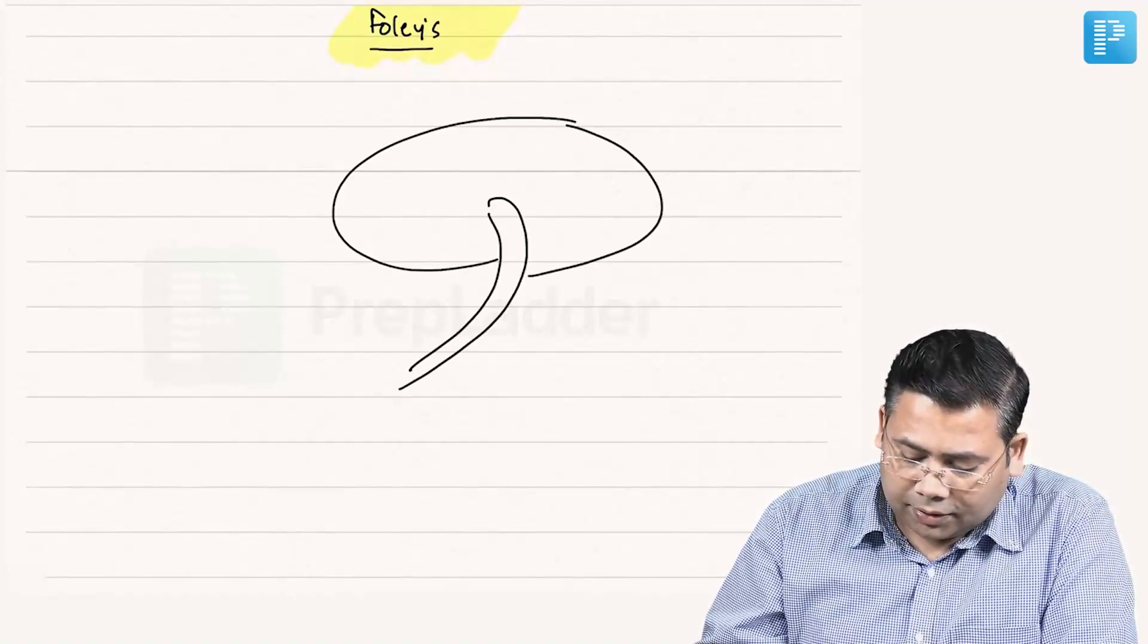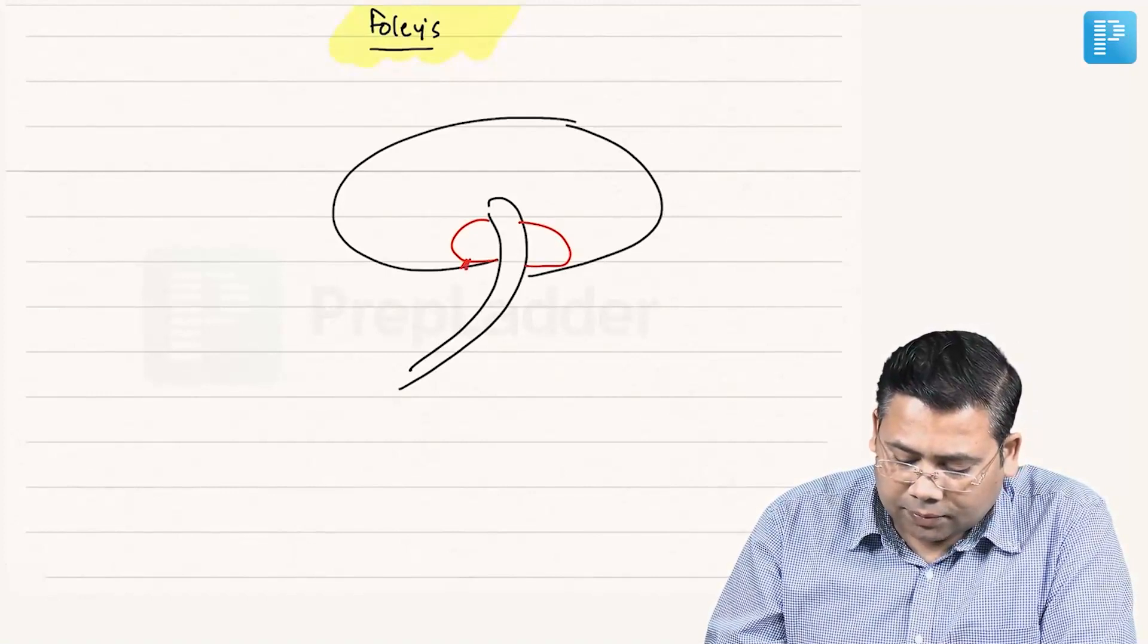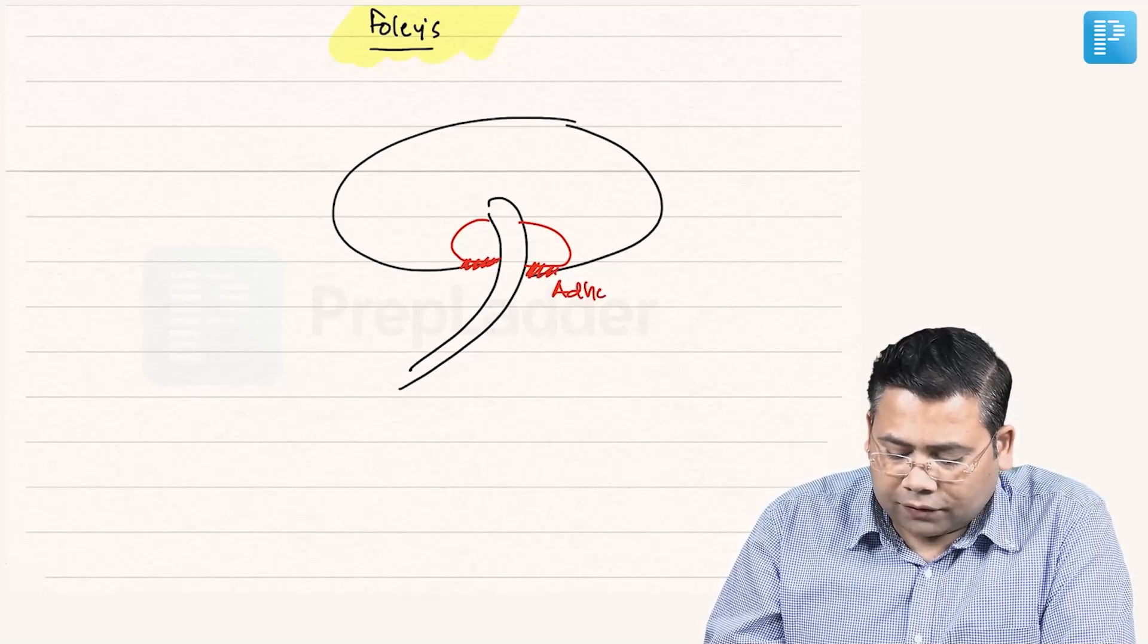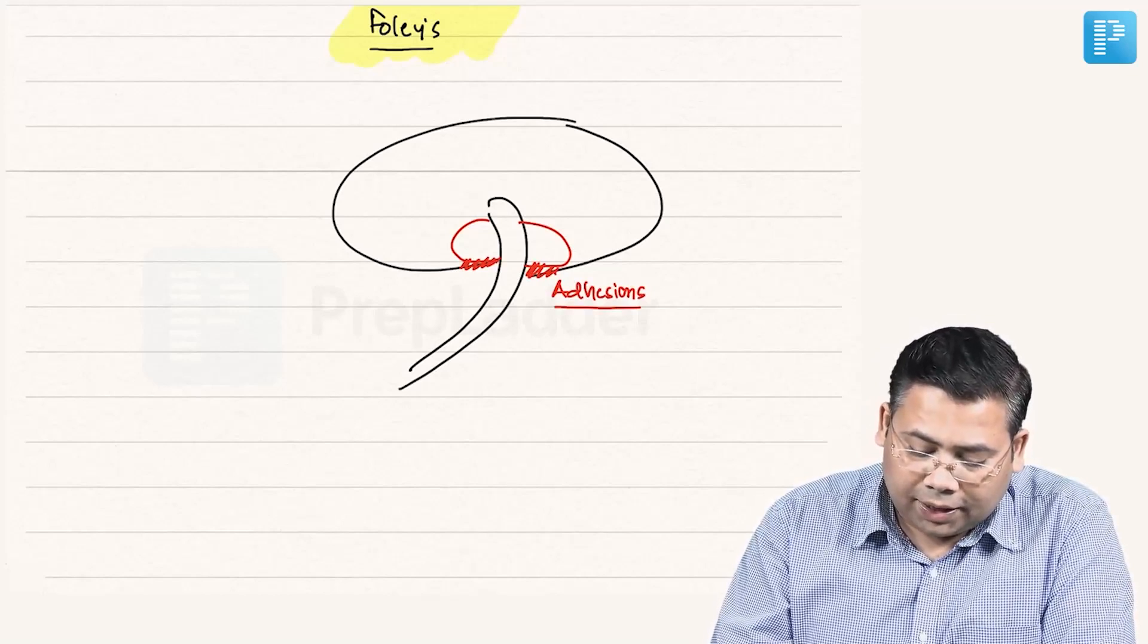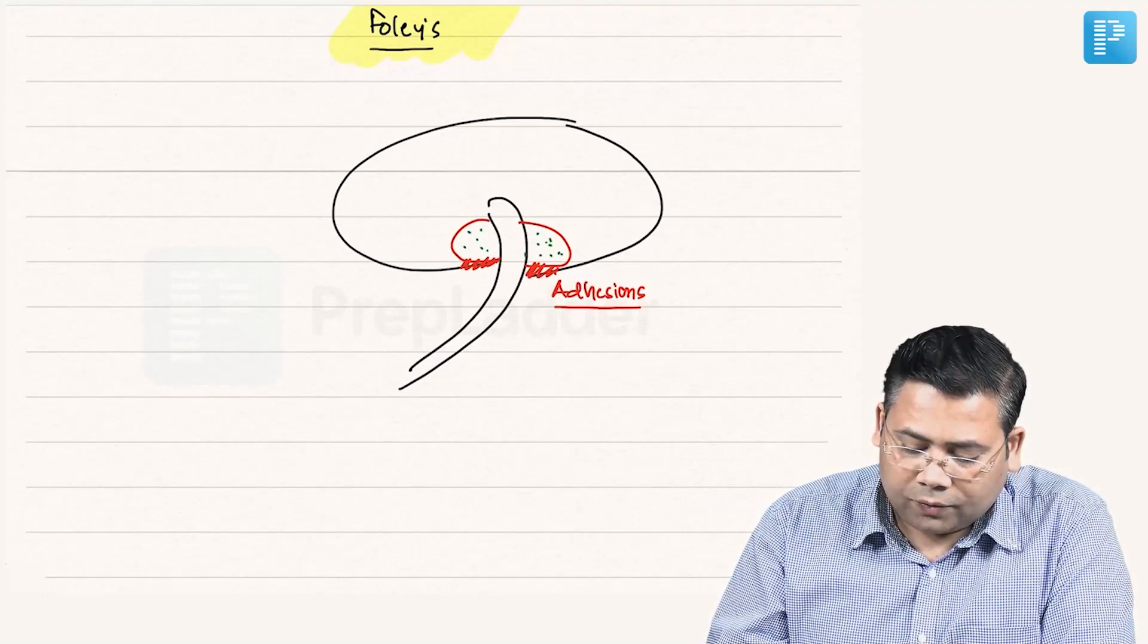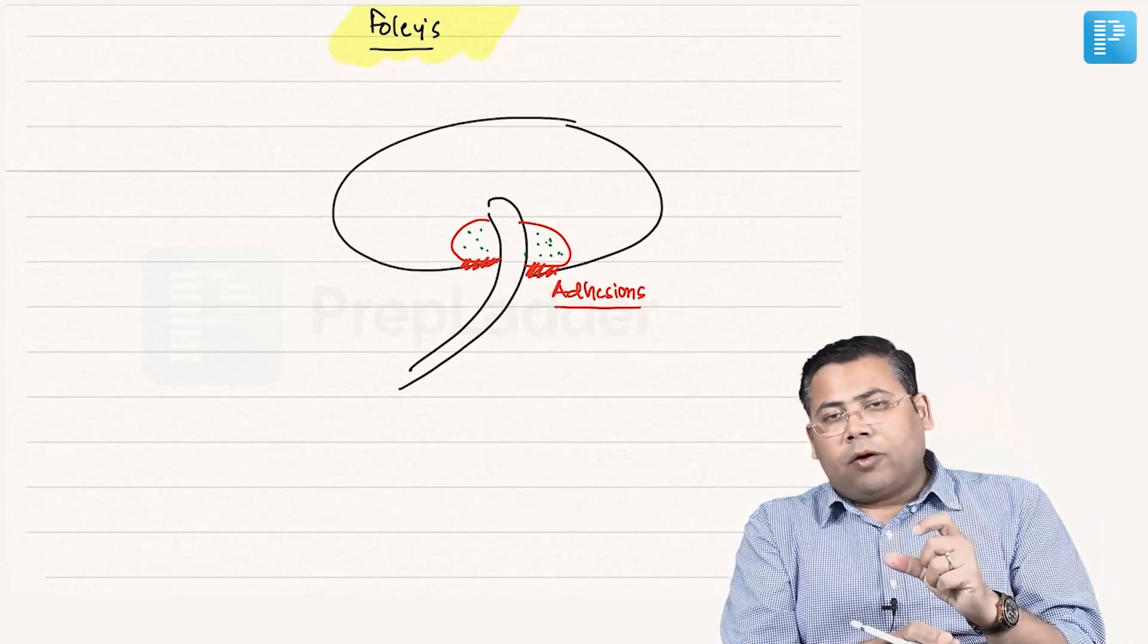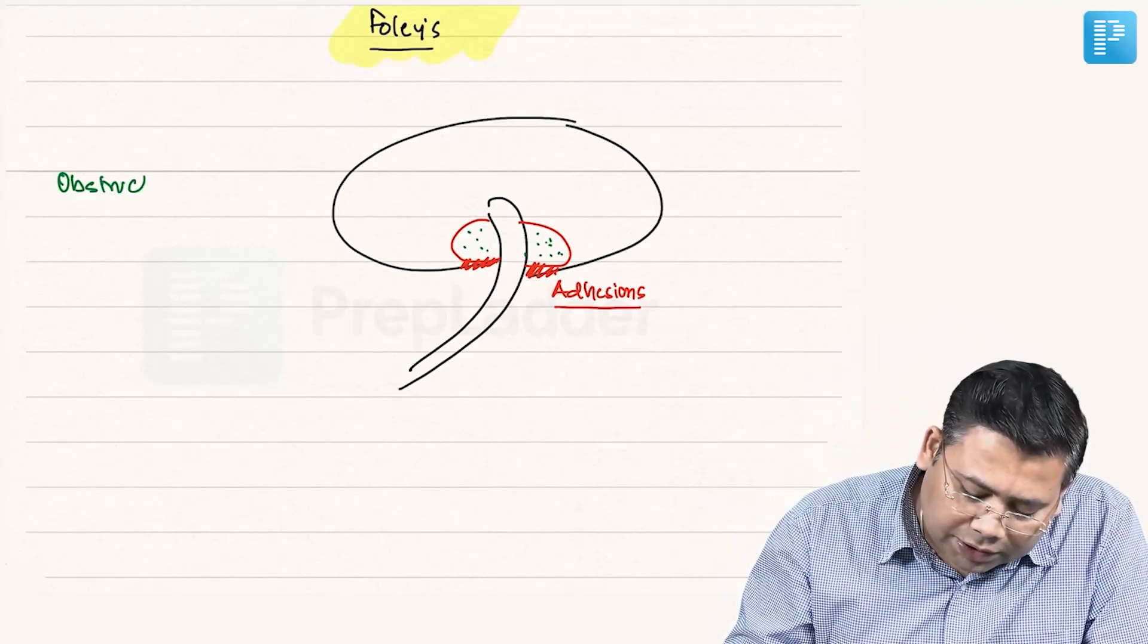This is the bladder. This is the tube. And here, this is the bulb. So many a times, there are adhesions of the bulb with the bladder wall. And the second is, many a times, the crystals precipitate. You may have used normal saline and the crystals precipitate in this more block. So the one very important thing is obstructed foleys.